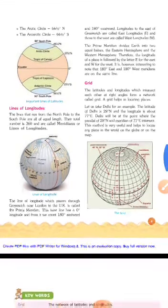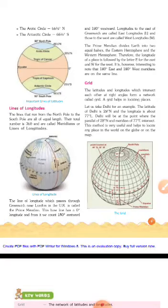From the prime meridian, we count 180 degrees eastward and 180 degrees westward — 180 plus 180 equals 360. Longitudes to the east of Greenwich are called east longitudes, and those to the west are called west longitudes.